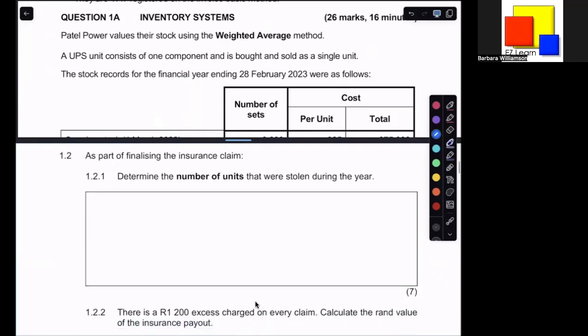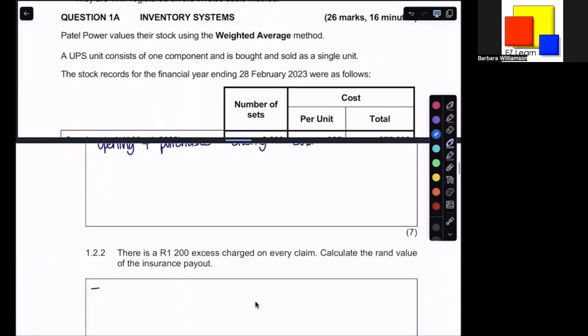As part of finalizing the insurance claim, we need to determine the number of units that were stolen during the year. The easiest way to do this is to remember that your opening inventory plus your purchases minus closing should equal what was sold. Therefore, any missing part along the way is going to illustrate how much was actually lost or stolen in this case.